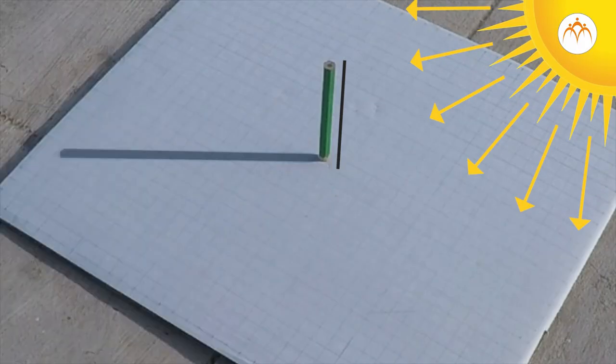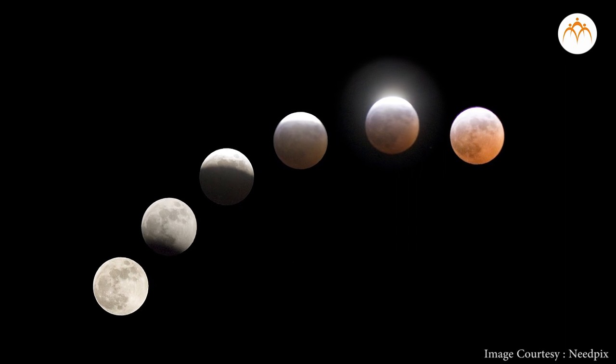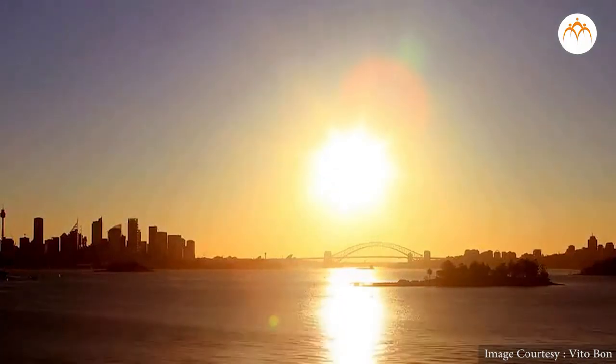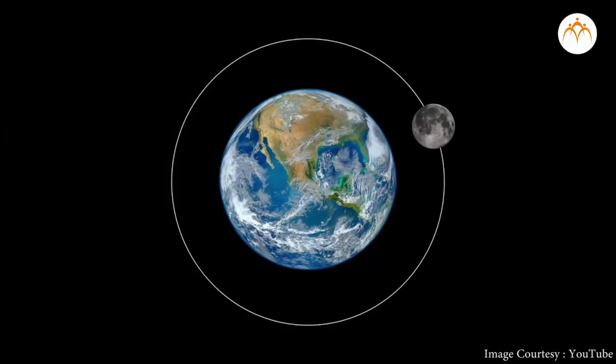We learned how shadows are formed. Let's explore how the formation of shadows plays a role in a very important event: eclipse. The sun is the main source of light. Earth revolves around the sun. Moon revolves around the earth.